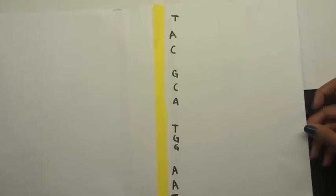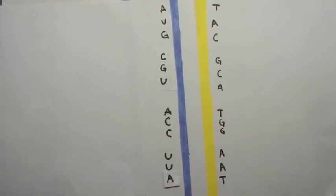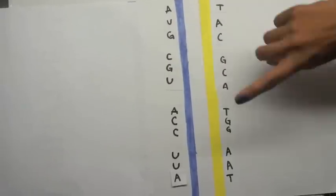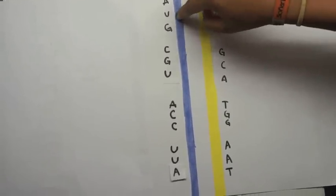In the process of translation, DNA strands turn into RNA strands, where thymine turns into adenine, but adenine doesn't turn into thymine, but it turns into uracil.